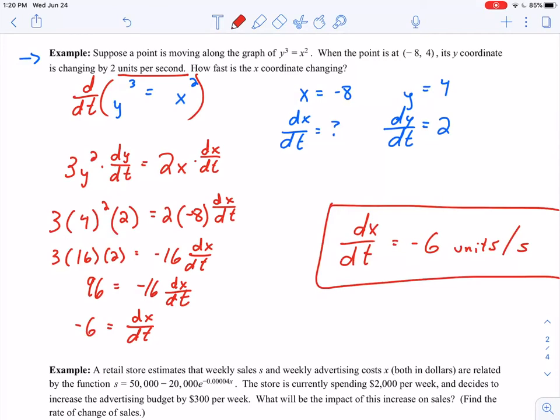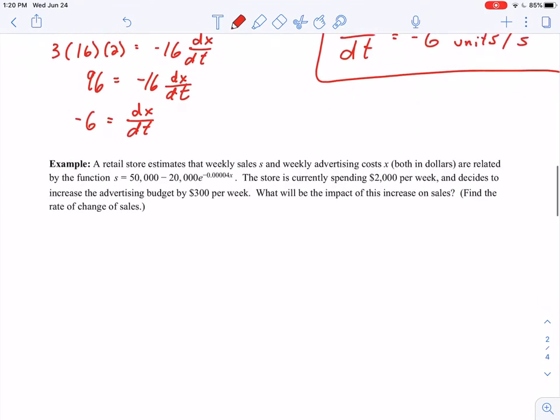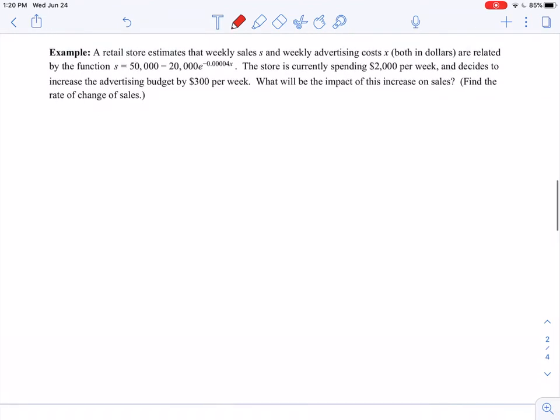Let's look at another example, this time a more quote-unquote real-world problem. Here I have a retail store that estimates that its weekly sales, S, and its weekly advertising costs, X, both which are measured in dollars, are related by the function S equals 50,000 minus 20,000 e to the negative 0.00004x.